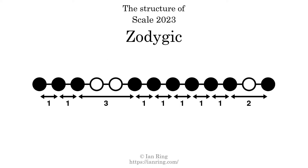The structure of a scale is a description of the interval distance between each successive tone. This scale has a structure of 1, 1, 3, 1, 1, 1, 1, 1, 2.